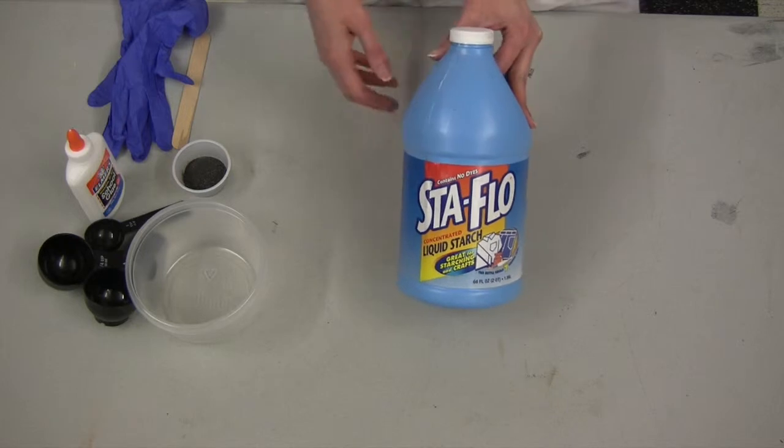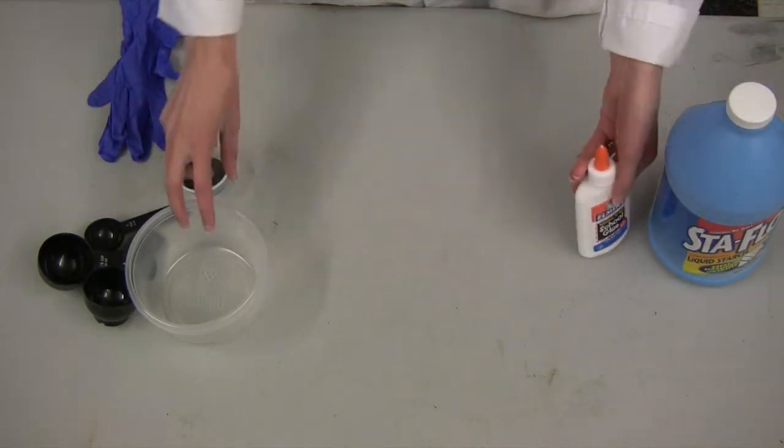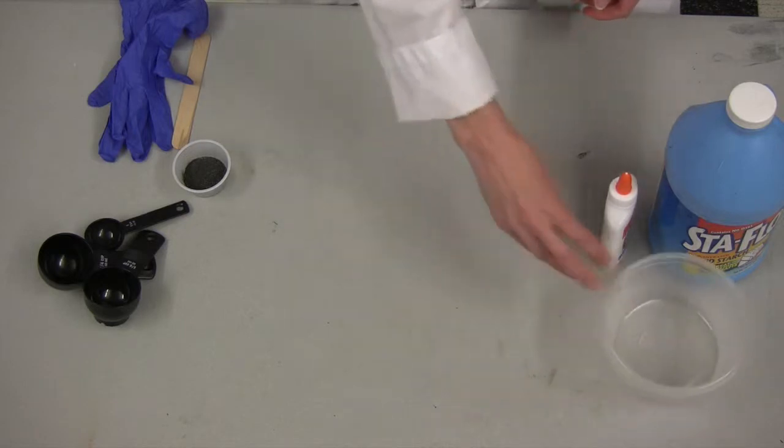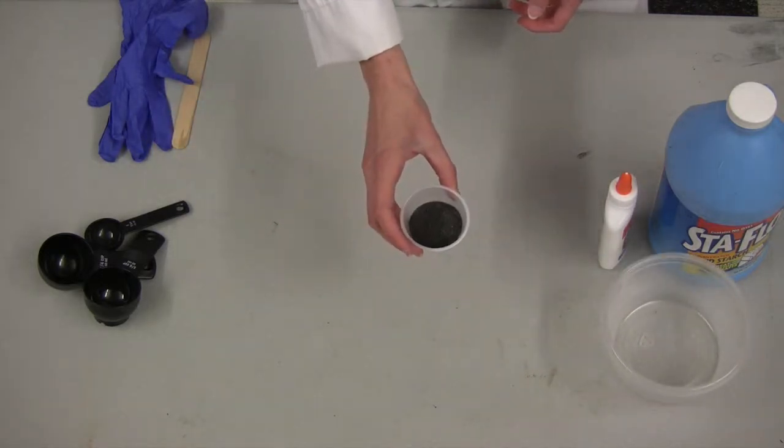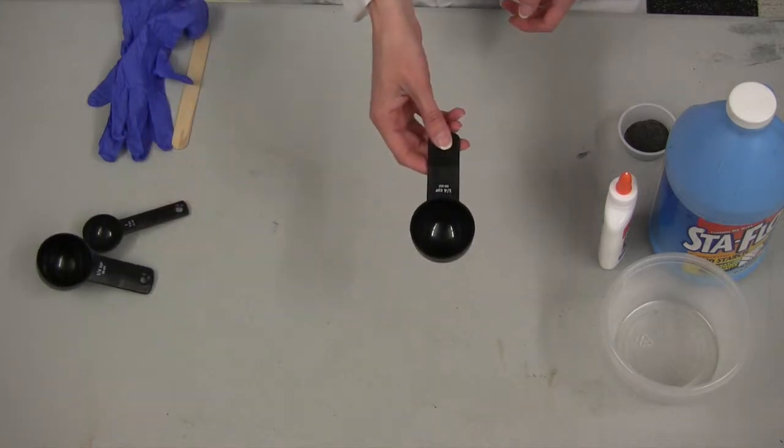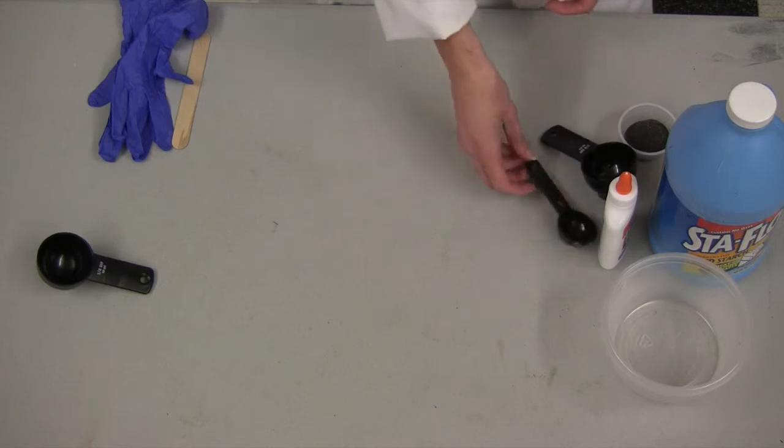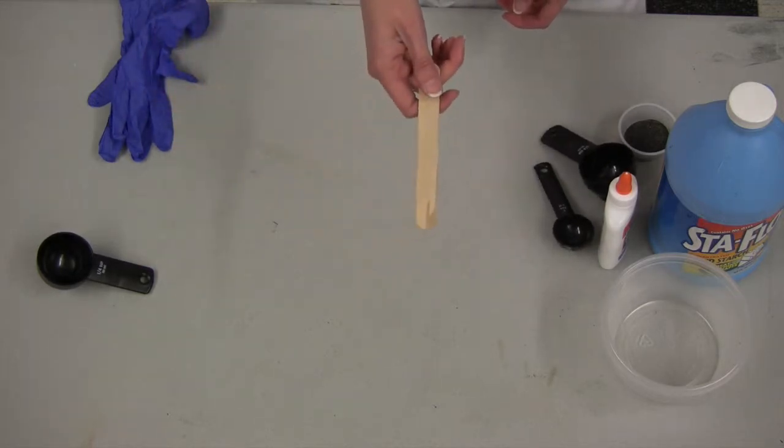You need some liquid starch, white glue, a measuring bowl, some iron oxide powder, one-fourth measuring cup, a tablespoon, and a stir stick.